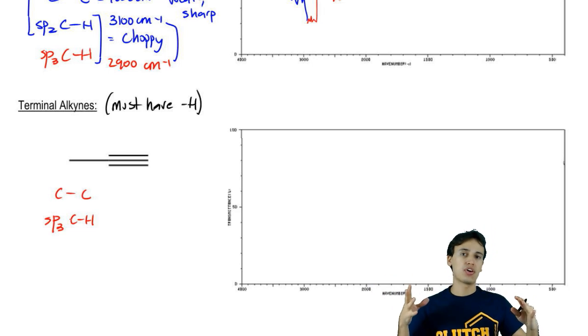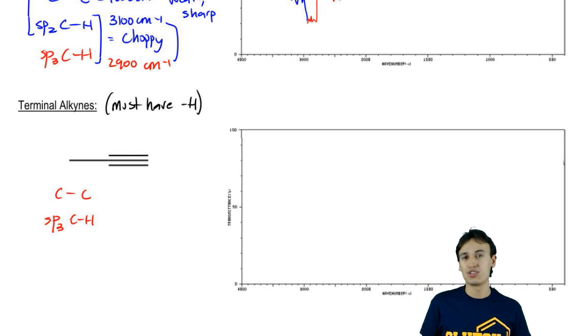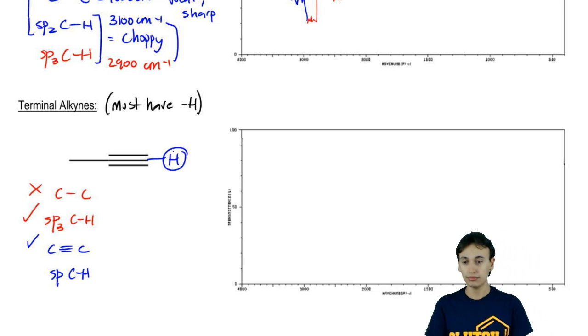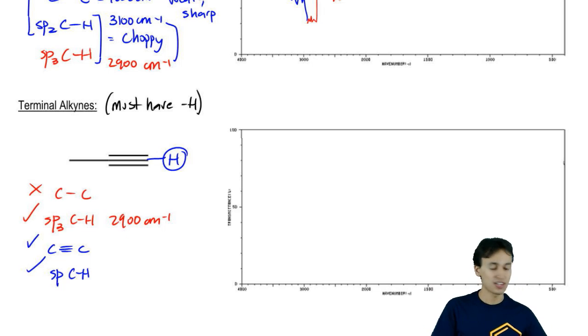Because remember that alkanes are the backbone of all organic molecules. So what are the chances that there's no alkane component? Very little. You're almost always going to draw an sp3 CH absorption. So we're X-ing out this one. This one we're definitely going to draw. But what else do we have? Well, now we have a C, triple bond C that we're adding. And we've also got an spCH bond, which is the hydrogen that's right here. So this just got interesting.